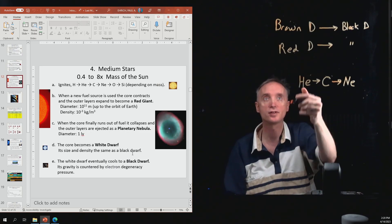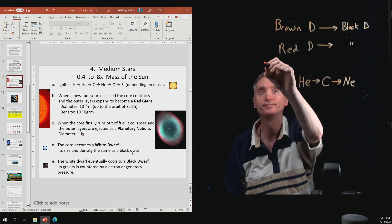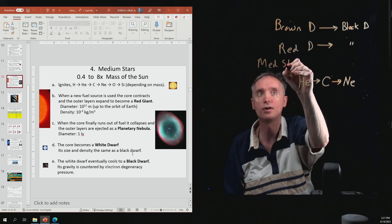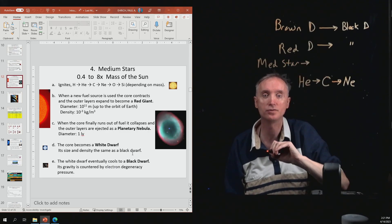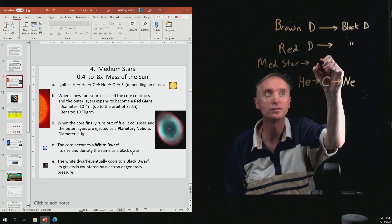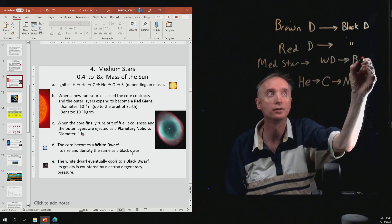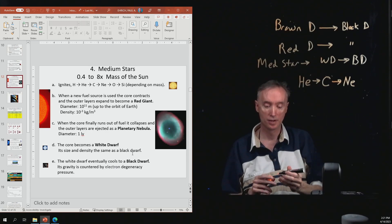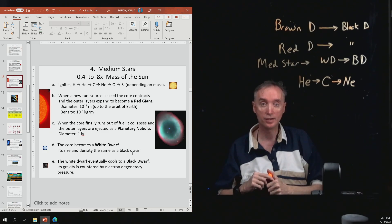Okay, so to summarize here, a medium star is going to first turn into a white dwarf, which then turns into a black dwarf. And then that planetary nebula thing just floats off into outer space. Okay, any questions?